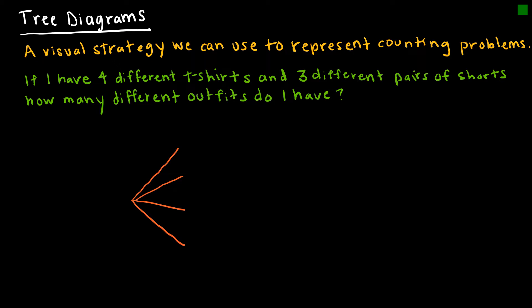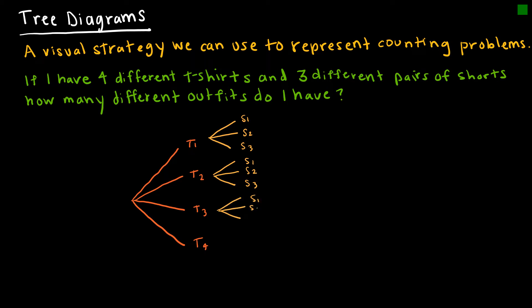I have four different t-shirts, so I'm going to call them t-shirt one, t-shirt two, t-shirt three, and t-shirt four. I have three different pairs of shorts, so off of each t-shirt I can choose short one, short two, or short three. Similarly for t-shirt two, t-shirt three, and t-shirt four, each branches into short one, short two, or short three.